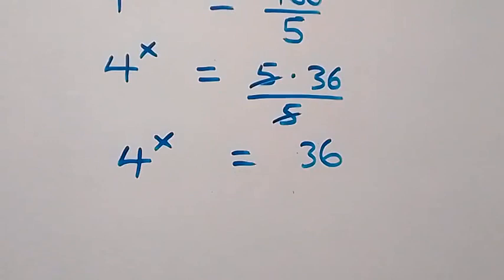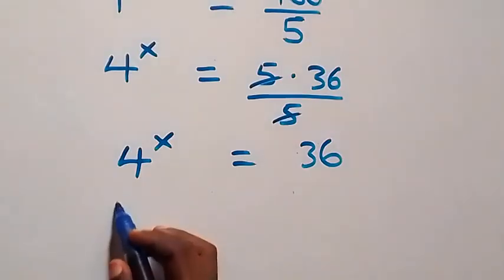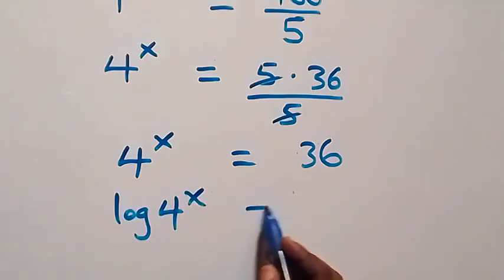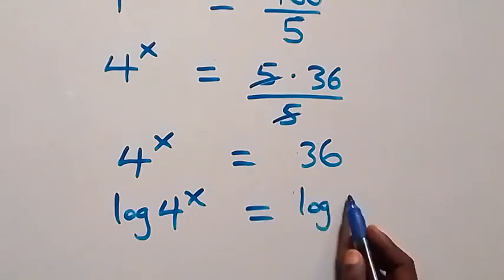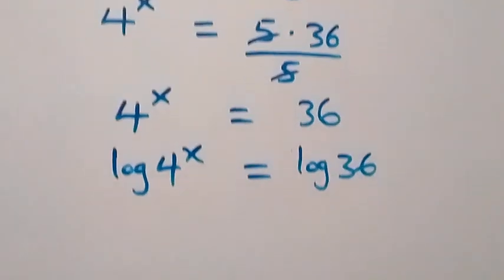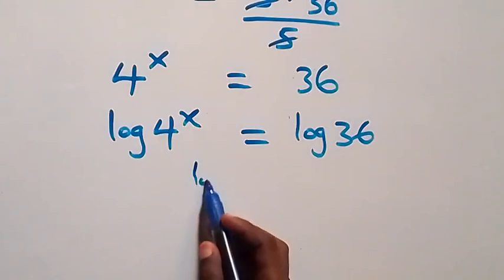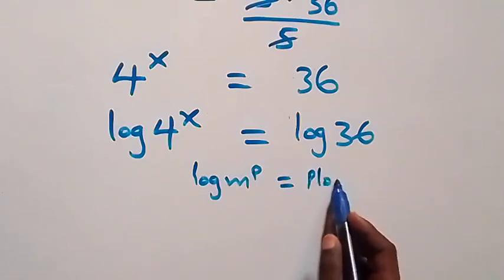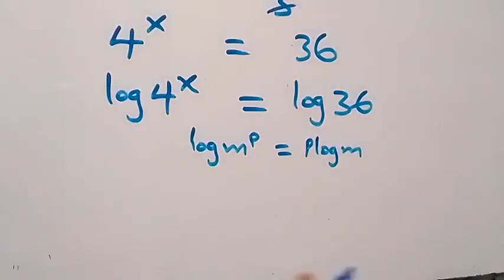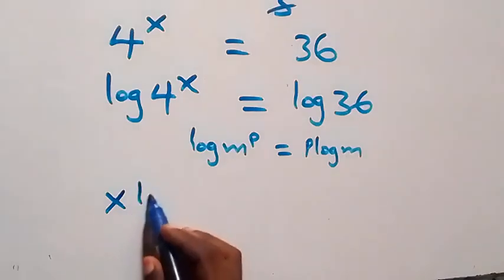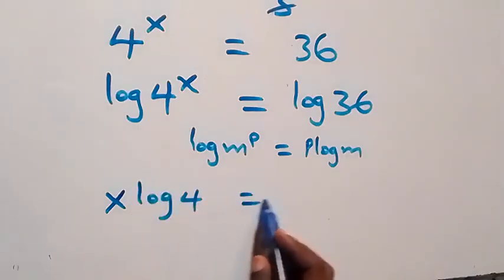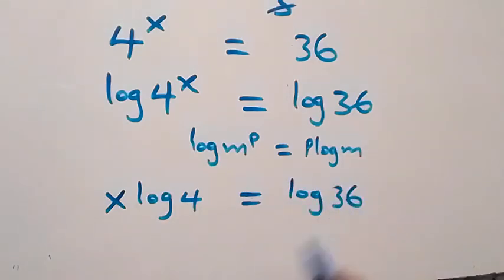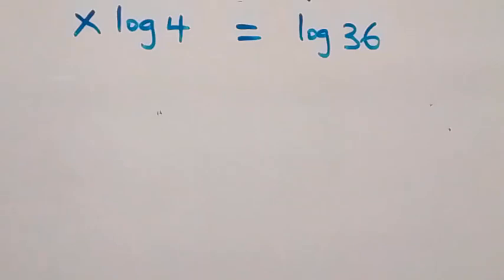Then here we take the log on both sides and we have log of four raised to power x equals log 36. From here we apply the power law of logarithms: when we have log of m raised to power p, that is the same thing as p times log m. So what we have becomes x log 4 equals log 36.